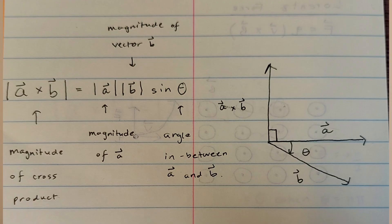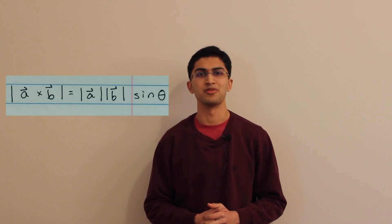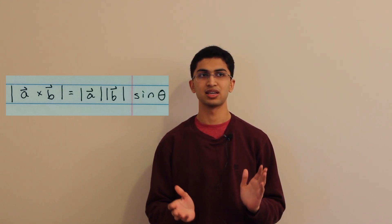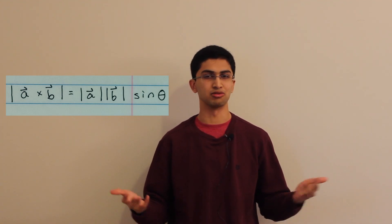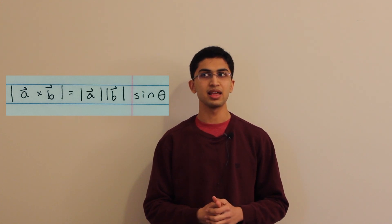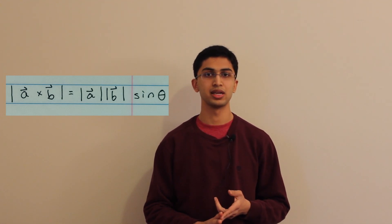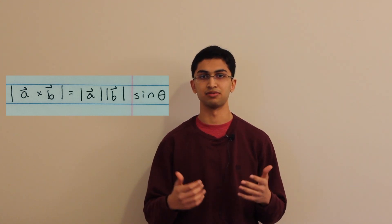Mathematically, we represent the cross product with this formula: the magnitude of the cross product of two vectors a and b is equal to the magnitude of a times the magnitude of b times the sine of theta, the angle between the two vectors. This comes from the area of a parallelogram, which we'll cover in another video. Note that this formula gives only the magnitude of the resultant vector — to get the direction, we need other techniques such as the right-hand rule, which we'll cover in subsequent videos.